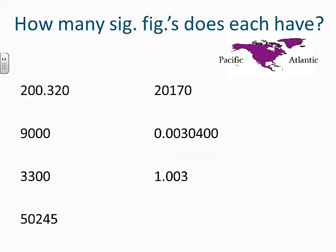For 1.003, the decimal is present, so we start on the Pacific side; the first non-zero digit is 1, and everything thereafter is significant — four significant figures. Now for numbers without a decimal: for 9000, the decimal is absent, so we start on the Atlantic (right) side going right to left. The first non-zero digit is 9, and it's the only significant figure — one significant digit. For 3300, decimal is absent; starting from the right, the first non-zero digit is the first 3 from the right — so both threes are significant, giving two significant figures.